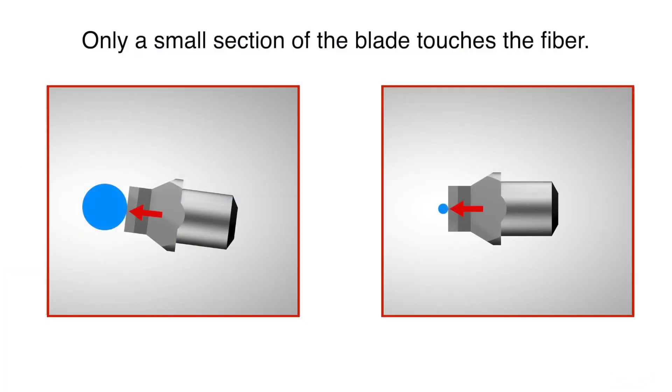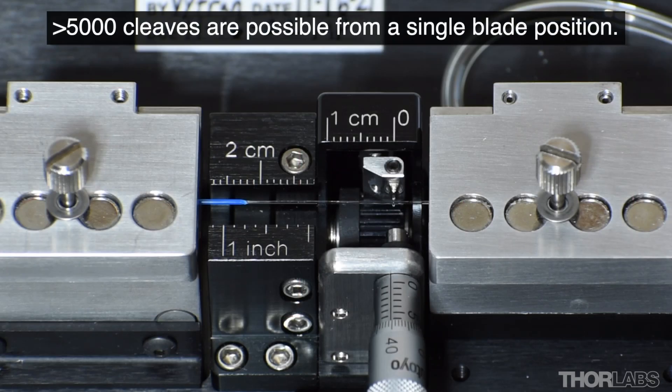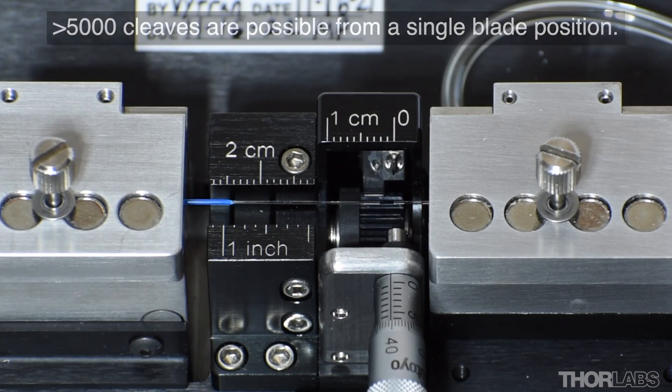During cleaving, only a very small section of the blade comes into contact with the fiber. A single section of the blade can remain sharp, producing good quality cleaves over 5000 times.